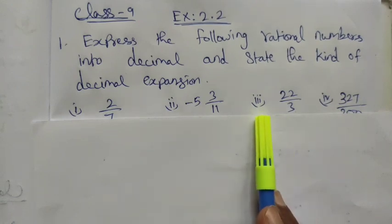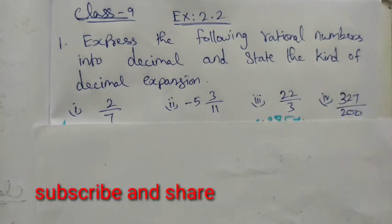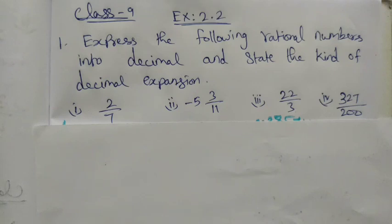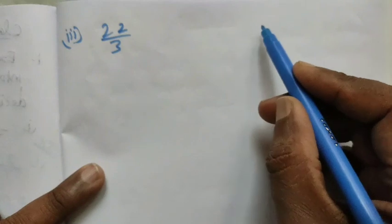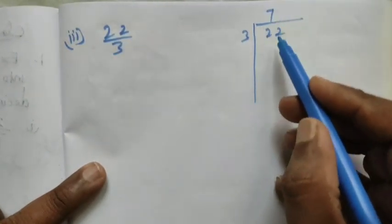The problems include 22/3 and 327/200. Let's solve them one by one. First, problem (iii): 22 divided by 3. So 22 divided by 3... 3 times 7 is 21, remaining is 1.